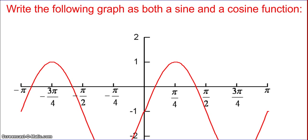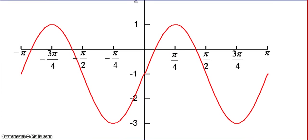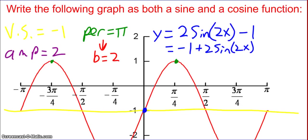Now I want you to come up with a sine and a cosine function for the following graph. Here's the graph — pause the video and come up with both functions, then unpause to check your work. The first thing to recognize is that there's a vertical shift of negative one, so I drew that line in.